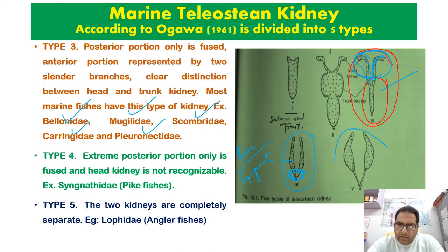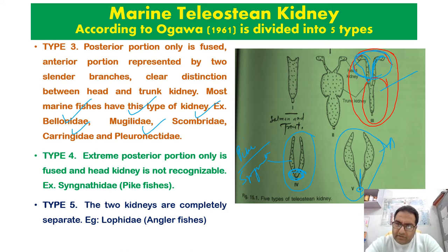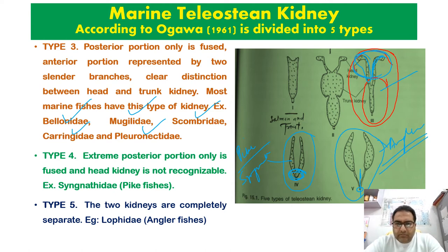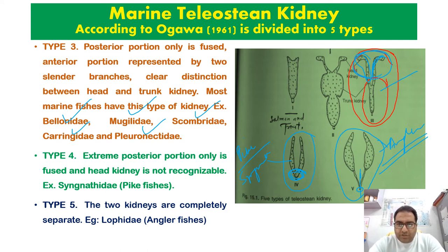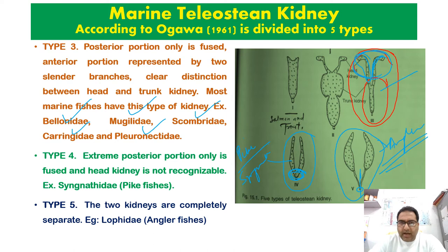Type 5 kidney: the head kidney and trunk kidney are completely separate — they are not fused anywhere and just release their contents into the duct. Examples are anglerfish. To recap: Type 1 is completely fused; Type 2 head and trunk are slightly differentiated; Type 3 the posterior portion is fused; Type 4 only the extreme posterior is fused; Type 5 is not fused at all.